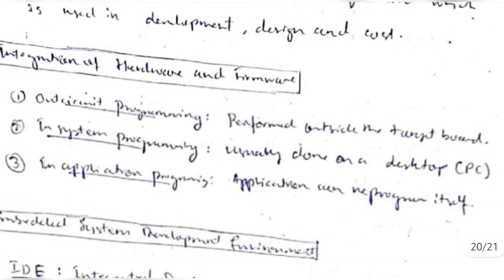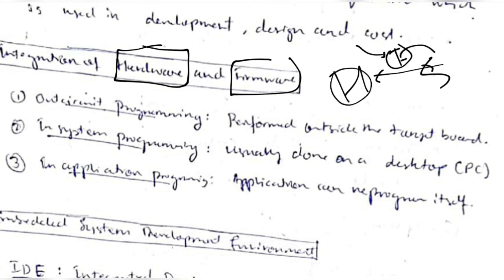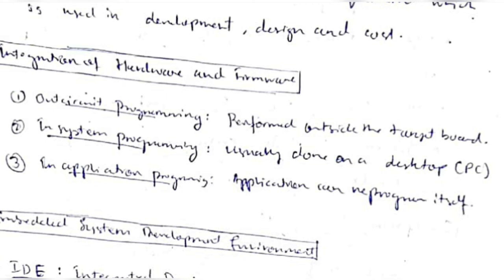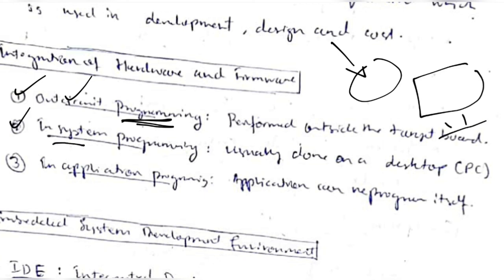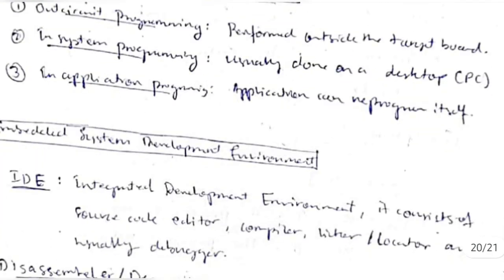Hardware and firmware integration: hardware refers to physical devices used to give commands to the computer; firmware sits between hardware and software, converting the code we write into software-level instructions. There are three types of firmware programming: out-circuit programming (programming code outside the system being developed), in-system programming (writing code on the same system being developed), and in-application programming (the application reprograms itself internally without external changes).